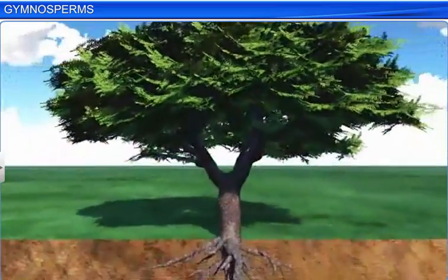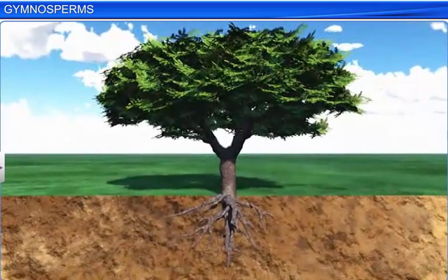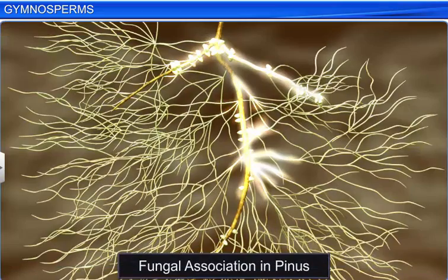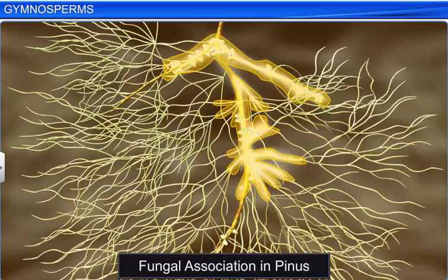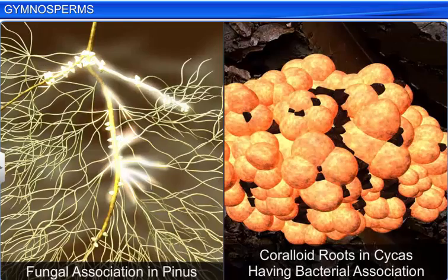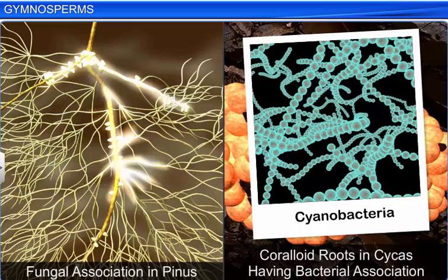If you take a look at the morphology of gymnosperms, you will notice that most of them have tap roots. Moreover, in some genera such as Pinus, the roots have a fungal association in the form of mycorrhiza. While in other genera such as Cycas, small specialized roots called coraloid roots have an association with N2-fixing cyanobacteria.